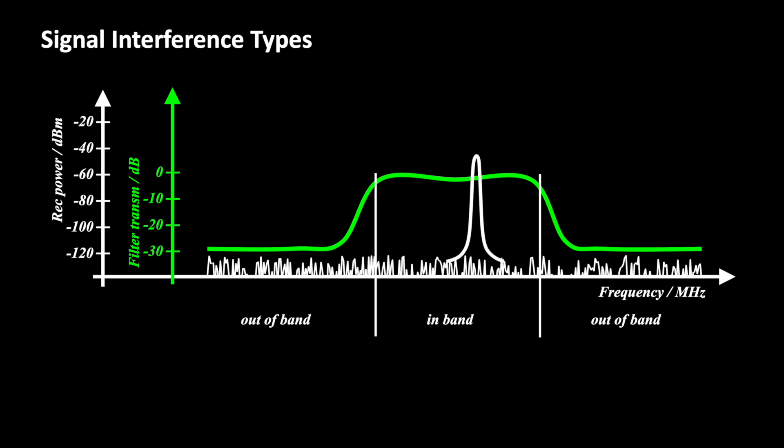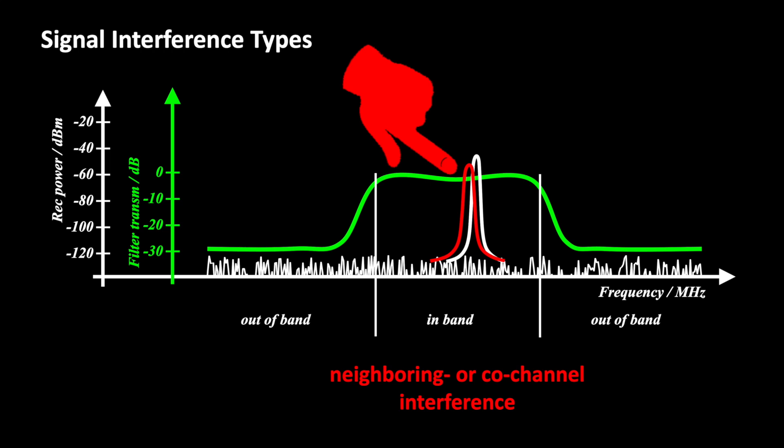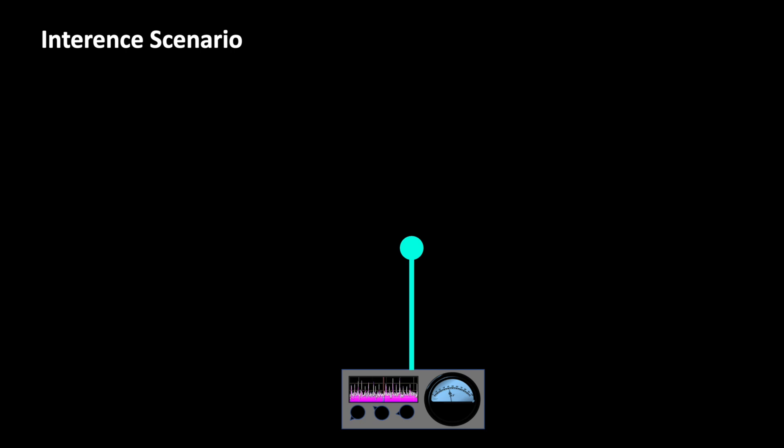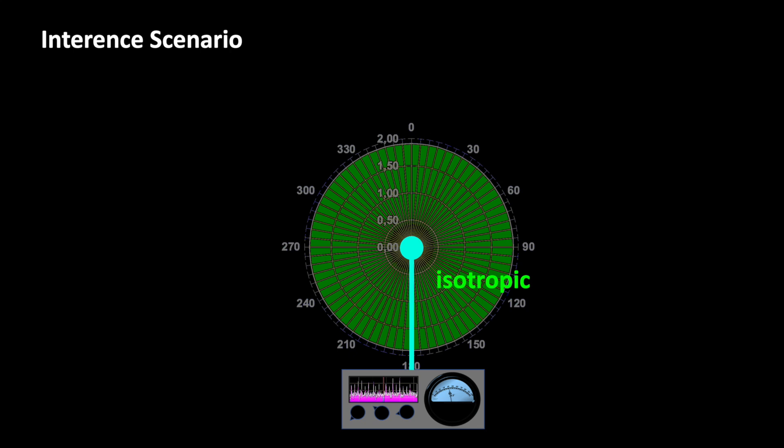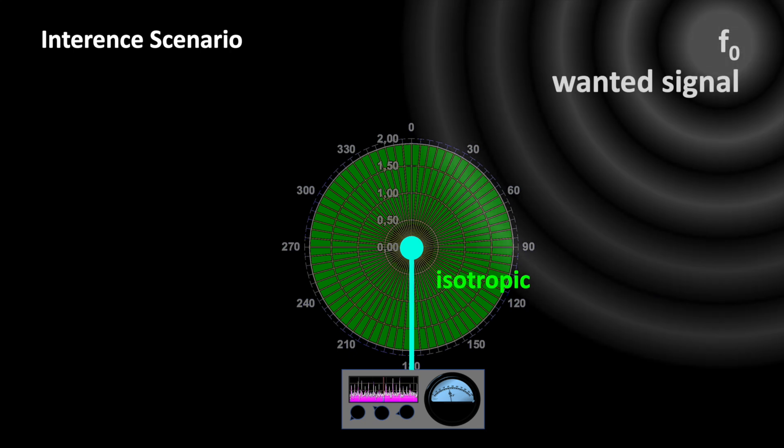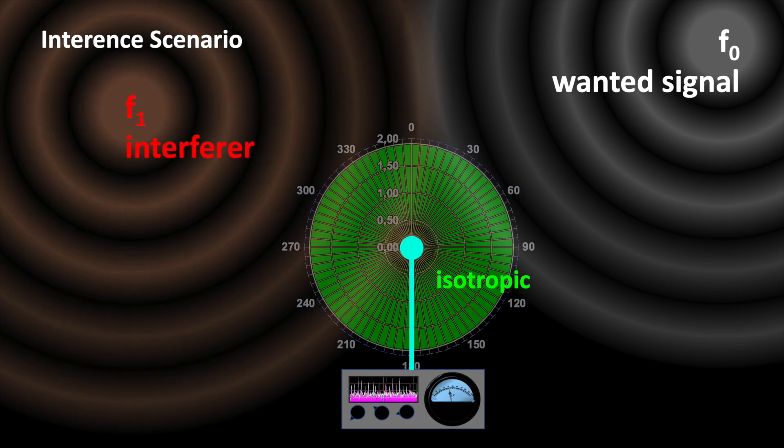Assuming a desired signal in white, which is superimposed by an undesired signal, which we are drawing in red. As soon as the undesired signal exceeds a certain level, interference is caused. In a simple scenario, the receiver is using an omnidirectional antenna. For simplification, we assume it's an isotropic antenna. The wanted signal, F0, is coming from the top right and an interfering signal, F1, comes from the top left. We want to know under what conditions it is causing interference and how we can avoid it.